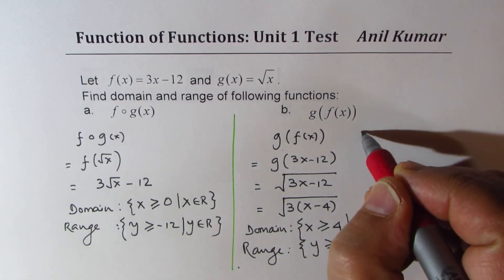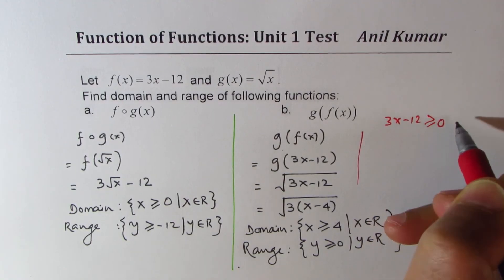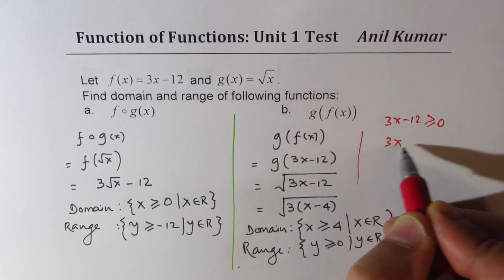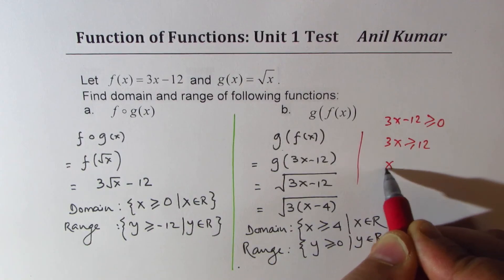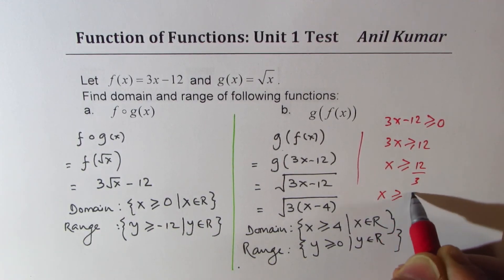So that gives you 3x is greater than or equal to 12, x is greater than or equal to 12 over 3. So x is greater than or equal to 4.